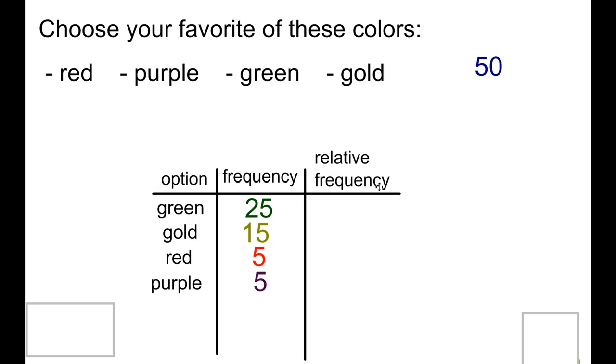The last thing over here is relative frequency. Relative frequency is dealing with a percentage. It's relative to the total. In this case, green is not 25. It's 25 out of 50.